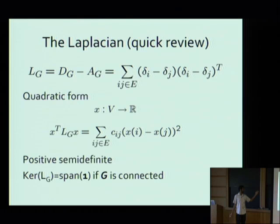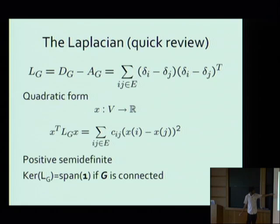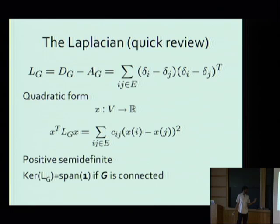Two key facts about the Laplacian: first, it is positive semi-definite since the quadratic form is always non-negative — it's a sum of squares. Second, the kernel of the Laplacian is exactly the span of the constant vector if the graph G is connected. If you want the quadratic form to be zero, you need x_i minus x_j squared to be zero for every edge, so x must be constant everywhere if the graph is connected. Technically the Laplacian is singular, but we know its null space is the span of the ones vector, so all vectors in this talk are orthogonal to this, and I'll talk about L-inverse in a few places.